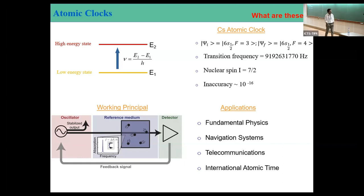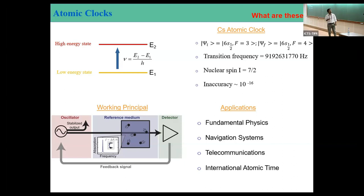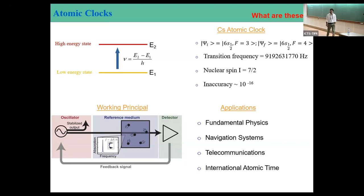A typical atomic clock has two components: an oscillator which generates electromagnetic radiation, and a reference medium — essentially the atoms, which can be one atom, one ion, or a collection of atoms. You shine laser light onto this reference medium; electrons get excited from one energy state to another. You keep shining the laser until all electrons from one energy level are excited to the upper level, then you lock the frequency of that laser, and use that locked frequency as the time measurement parameter.